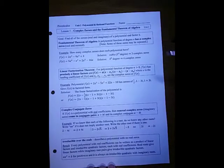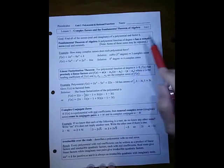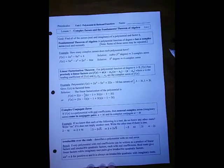Pre-calculus unit 2 lesson 5, complex zeros and the fundamental theorem of algebra. If we were to find all the zeros, both real and imaginary, and factor it, the fundamental theorem says that if it's an nth degree, then it has to have n roots, real and non-real, put together.